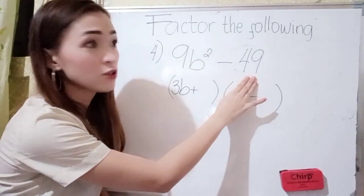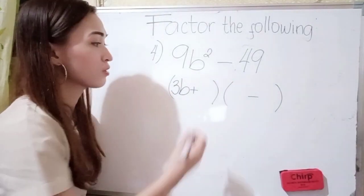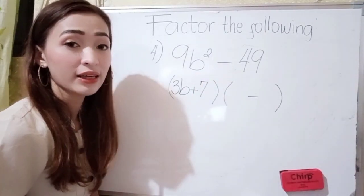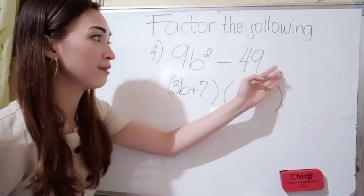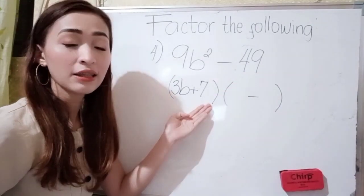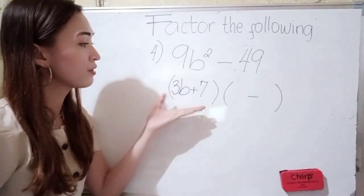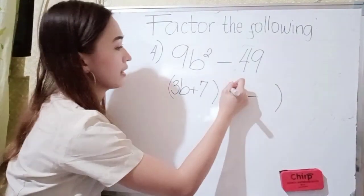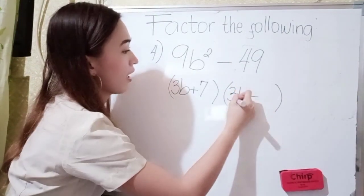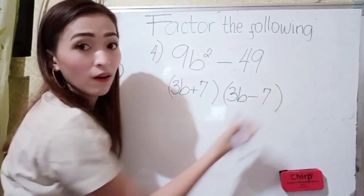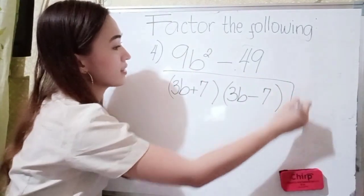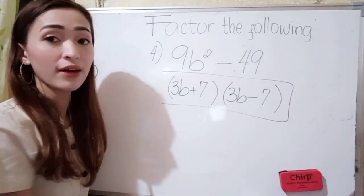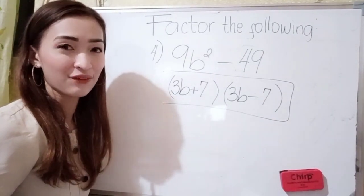Next, 49. What is the square root of 49? The square root of 49 is 7, because 7 times 7 is 49. Since we don't have a variable here, this is the final answer in our left-hand side. Now copy this to the right-hand side, so it becomes 3b minus 7. Our final answer is 3b plus 7, times 3b minus 7.